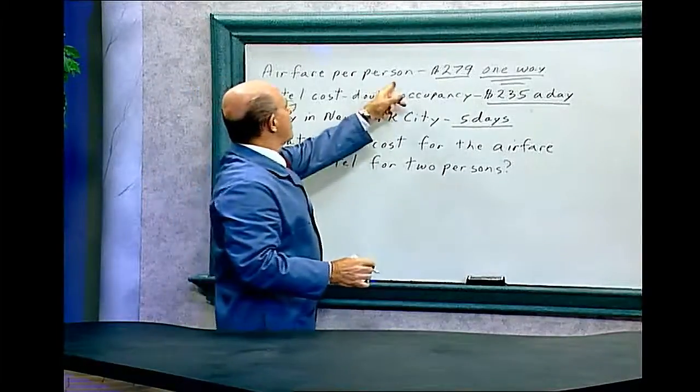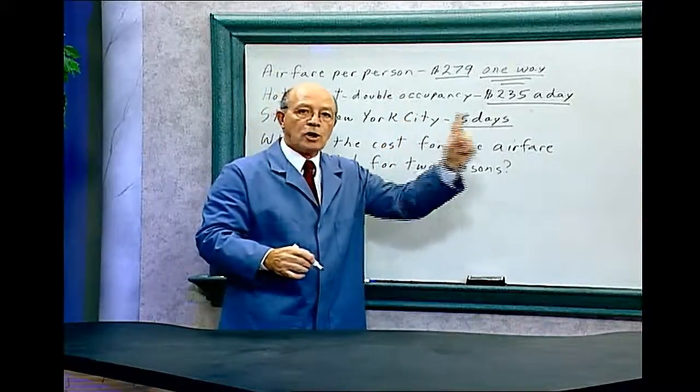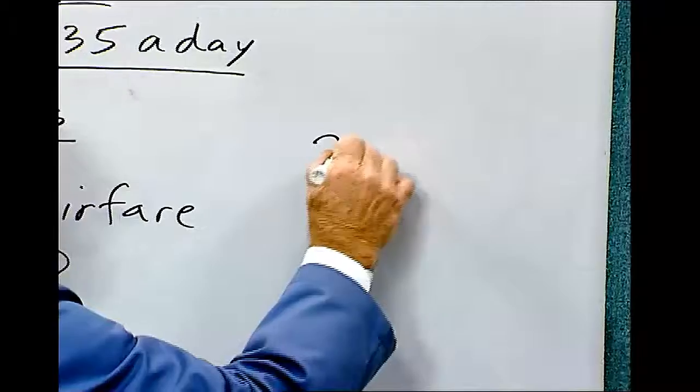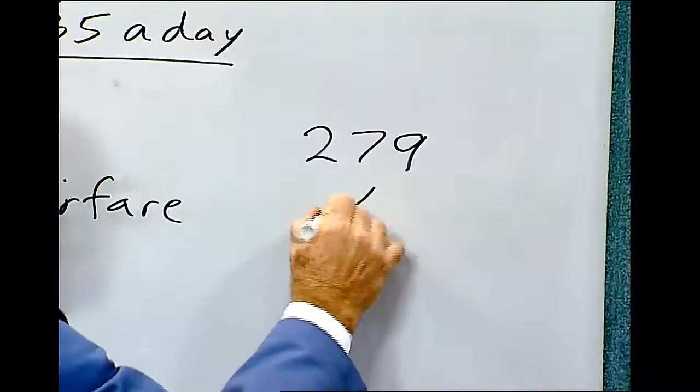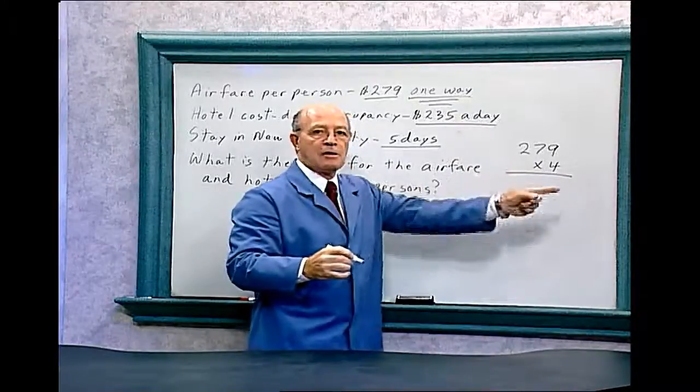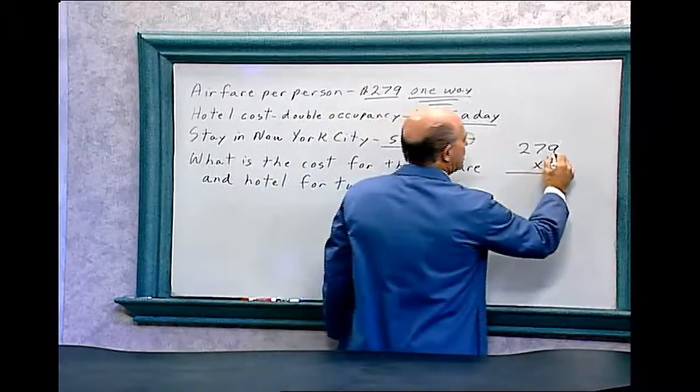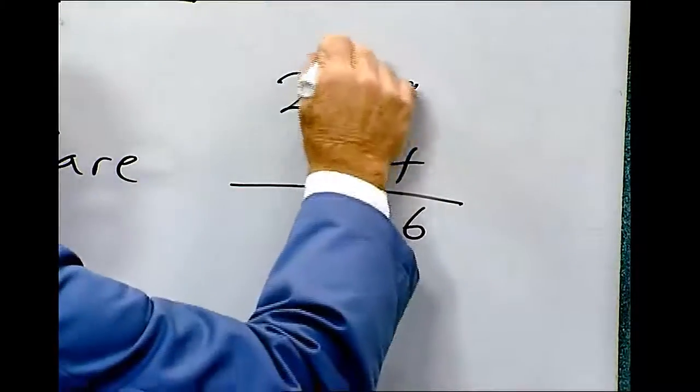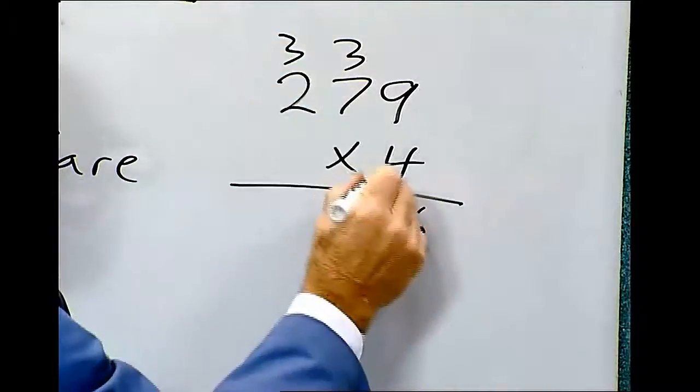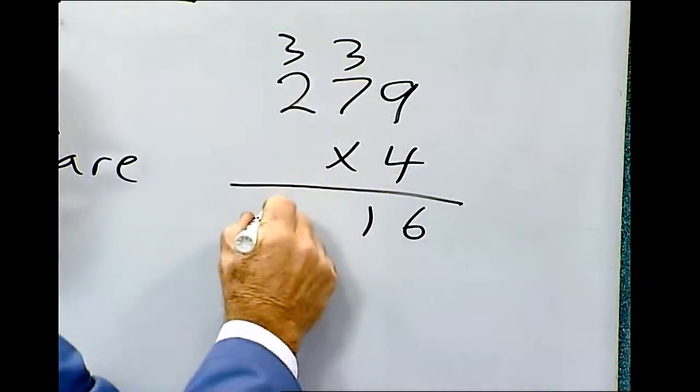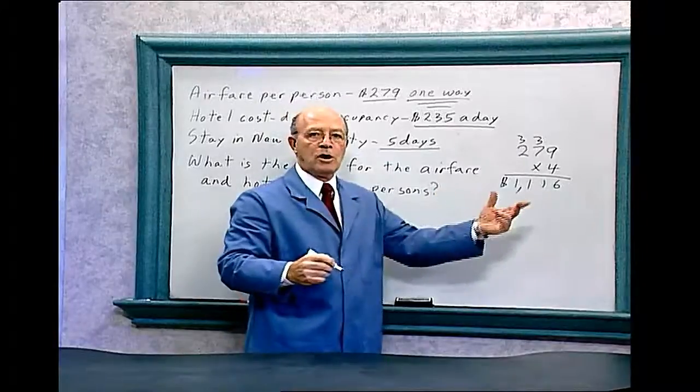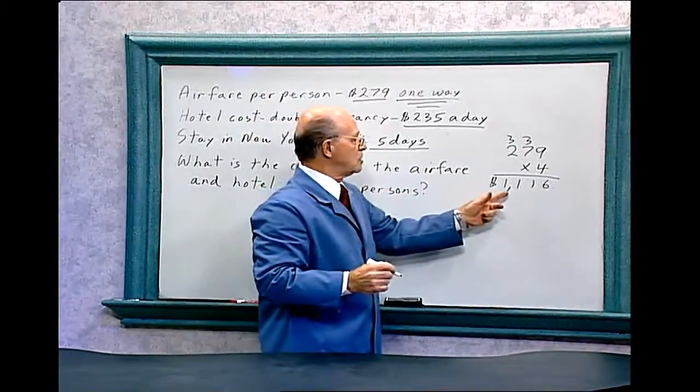So per person, it's $279 to go and to come back. So that's two airfare prices. We have to do $279 times four, because you're doing actually four trips: there, back, there, and back for the two people. So nine times four is 36. Four times seven is 28, plus three is 31. Four times two is 8, plus three is 11. So those tickets to fly to New York cost for two people $1,116.